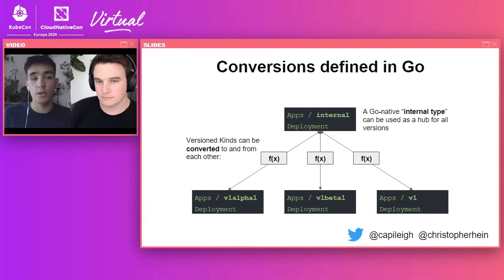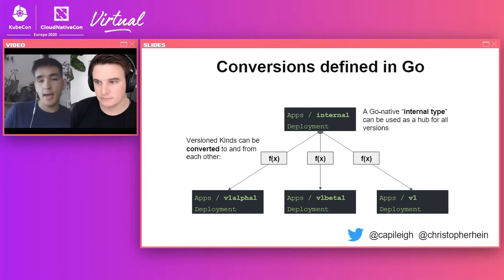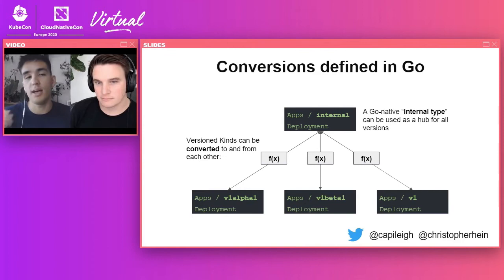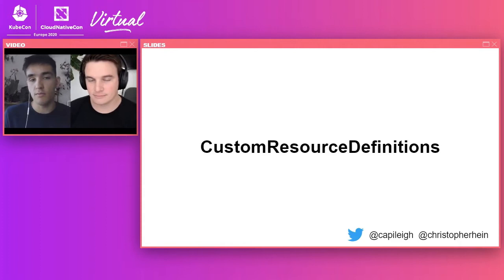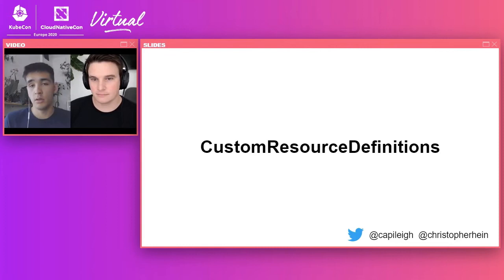This allows us to support the alpha and beta versions of the kubelet configuration concurrently with a single version of the kubelet. We do this through an internal hub type. You see at the top of this diagram an `apps` internal deployment — imagine having a kubelet configuration as the internal type. You have these bi-directional function pairs: each spoke in the diagram connecting to the hub allows us to get from `v1alpha1` to the internal type, or through the hub type to `v1beta1`. You can build tooling around these APIs by importing the Go native library.